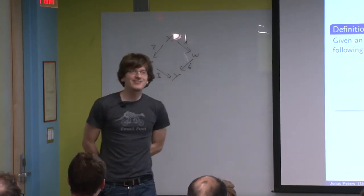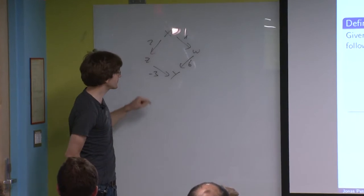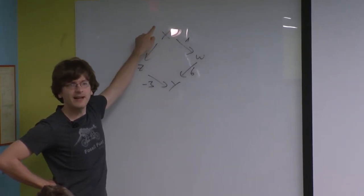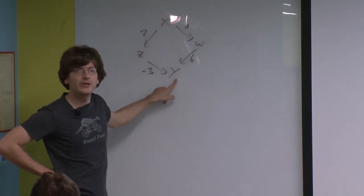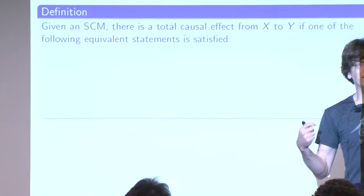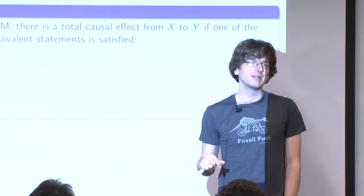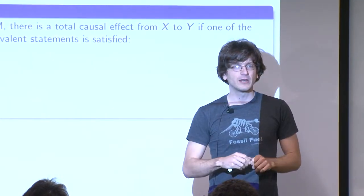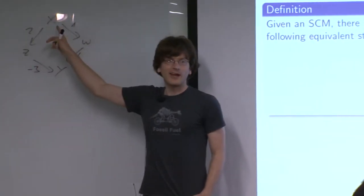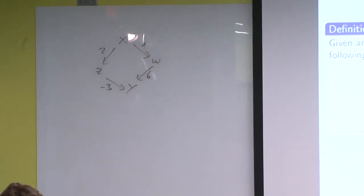Sometimes in nature these things do happen. There's one famous example: sunlight causes vitamin D production, and you'd think people near the equator produce more vitamin D. However, evolution arranged it so that these two things become independent - via the mechanism of skin color. Sometimes in biological systems you do want these canceling-out paths, but from a mathematical point of view, this happens with probability zero.